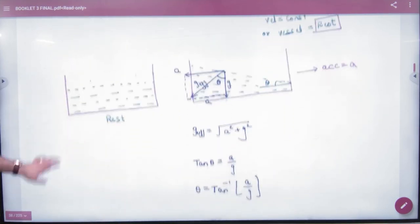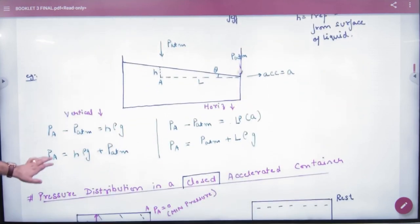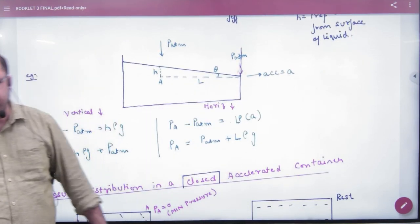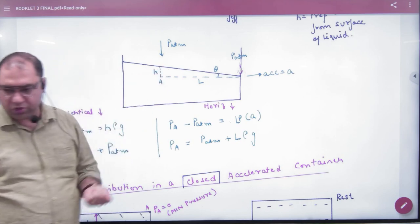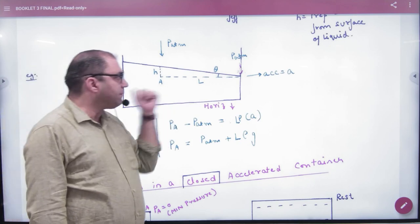Then we discussed that if we think there is accelerated motion, if the acceleration is A, then the pressure at A minus pressure at this point is H-Rho-G. But if I put this concept in horizontal...